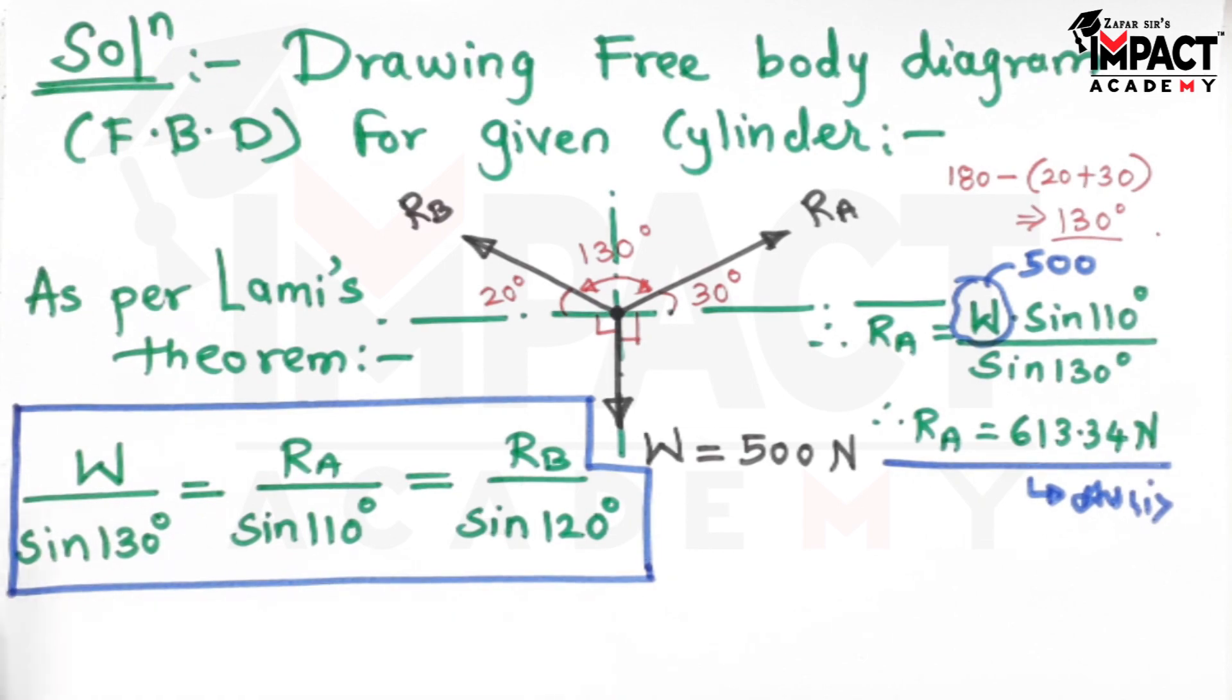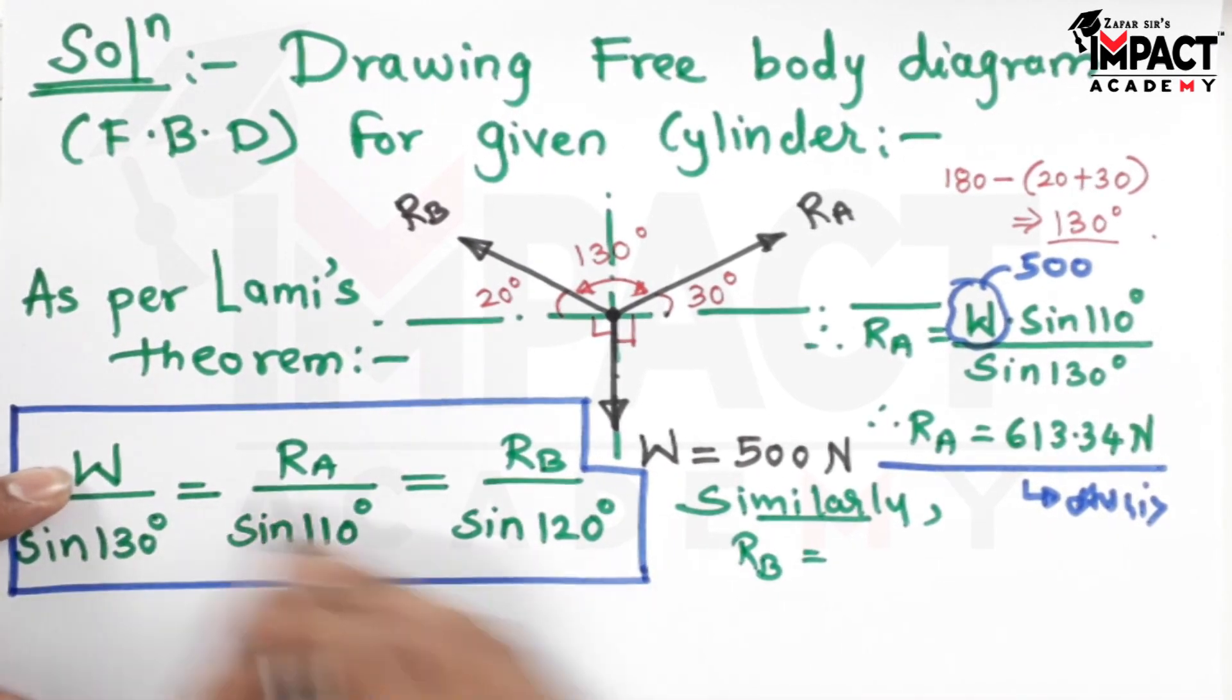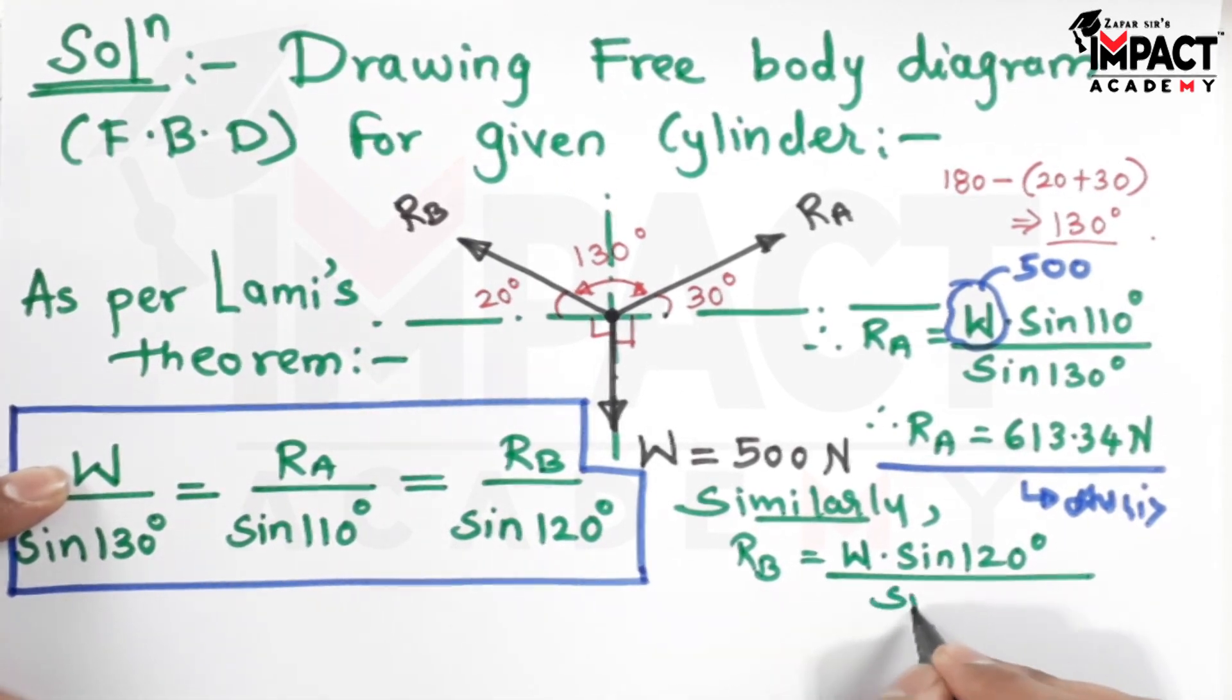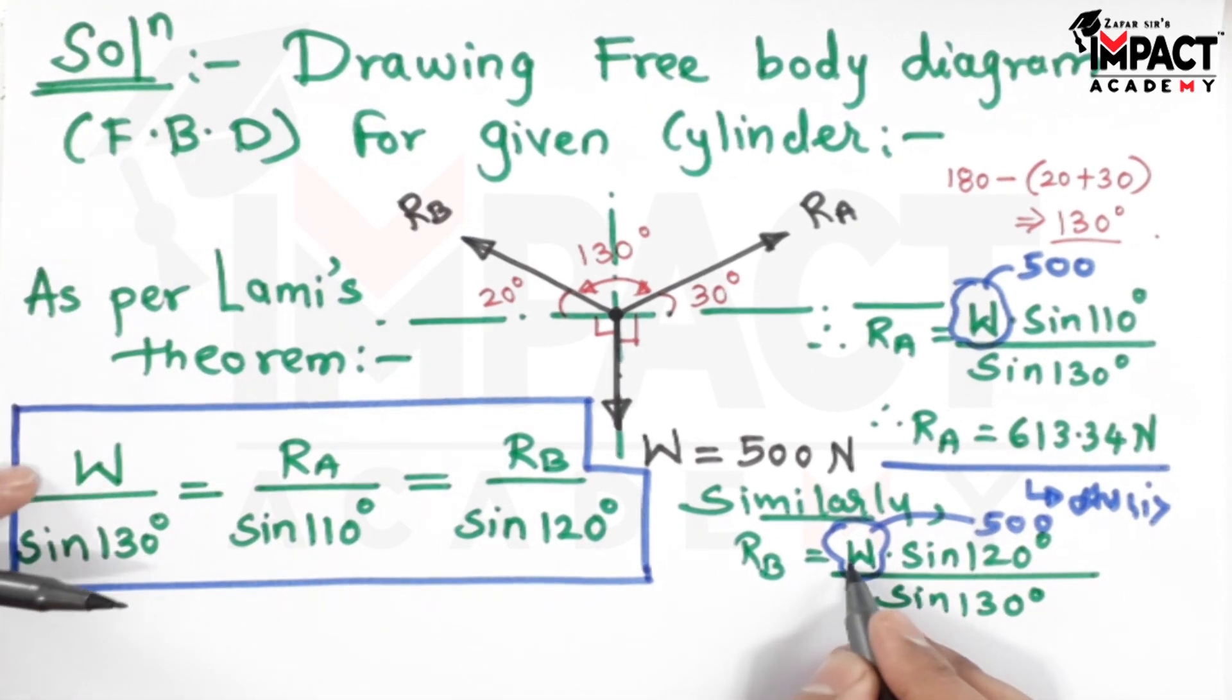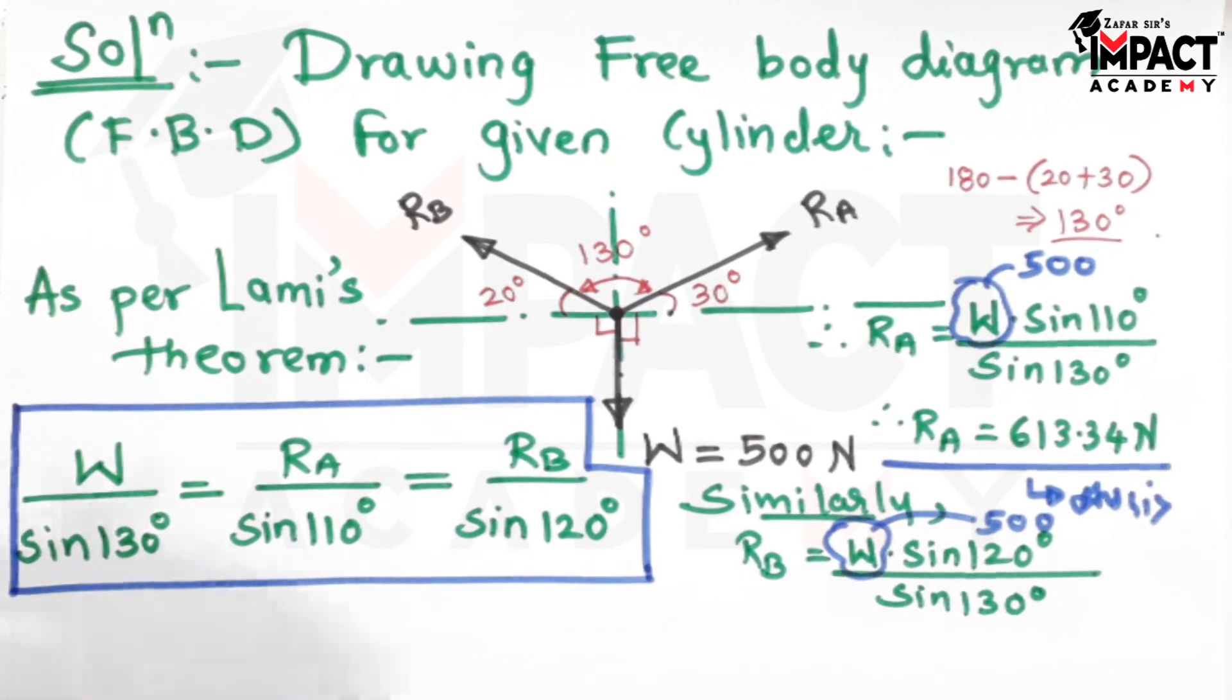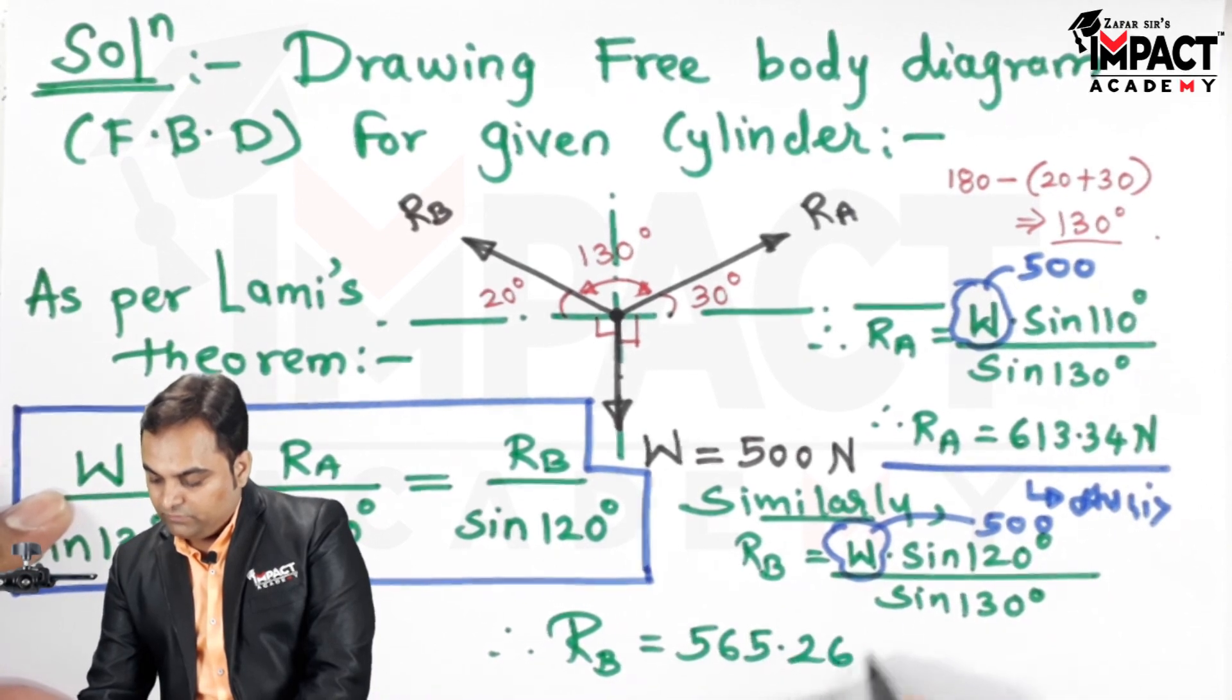Now similarly, I would be using the first and the last term to get RB. So RB will be W into sin 120 divided by sin 130. And W value is 500 Newton, so putting 500 here, 500 sin 120 divided by sin 130. The answer of RB comes out to be 565.26 Newton.